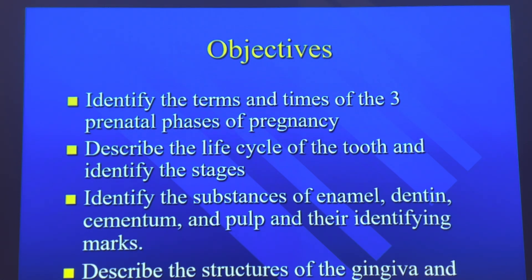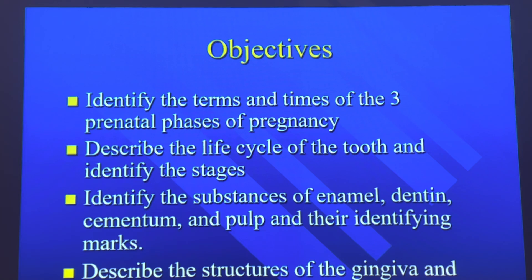Your objectives for this chapter are to identify the terms and times of the three prenatal phases of pregnancy. Describe the life cycle of the tooth and identify the stages. Identify the substances of enamel, dentin, cementum, and pulp, and their identifying marks. And describe the structures of gingiva and mucosa.